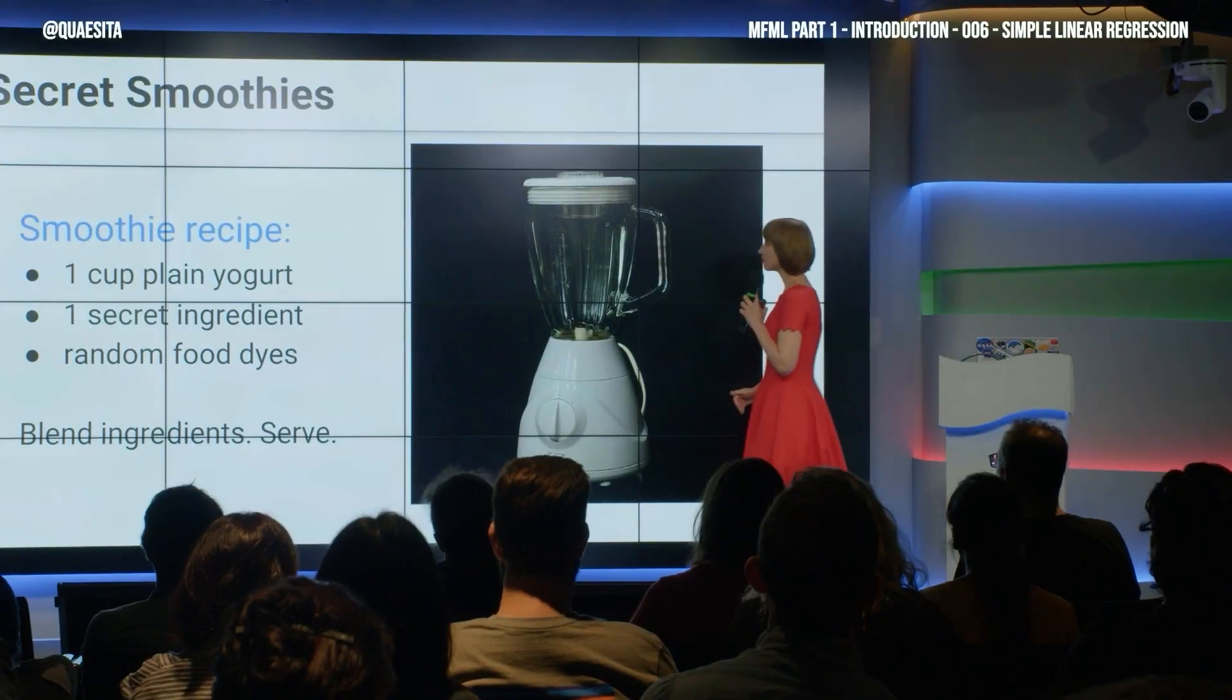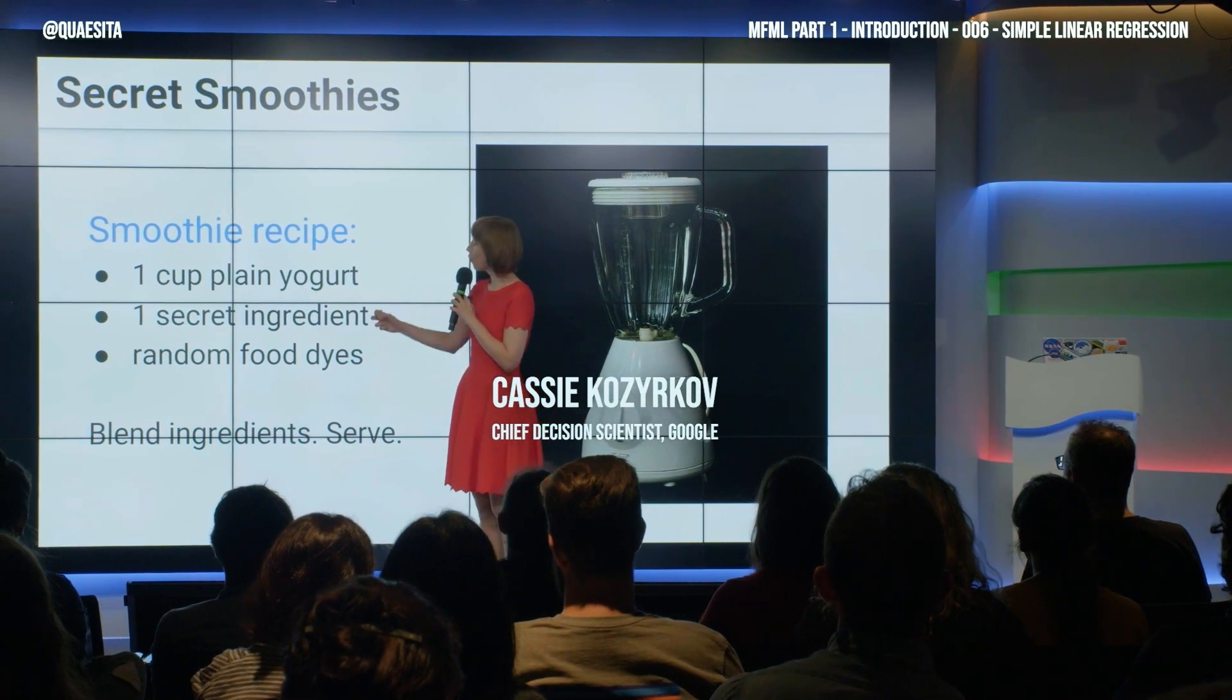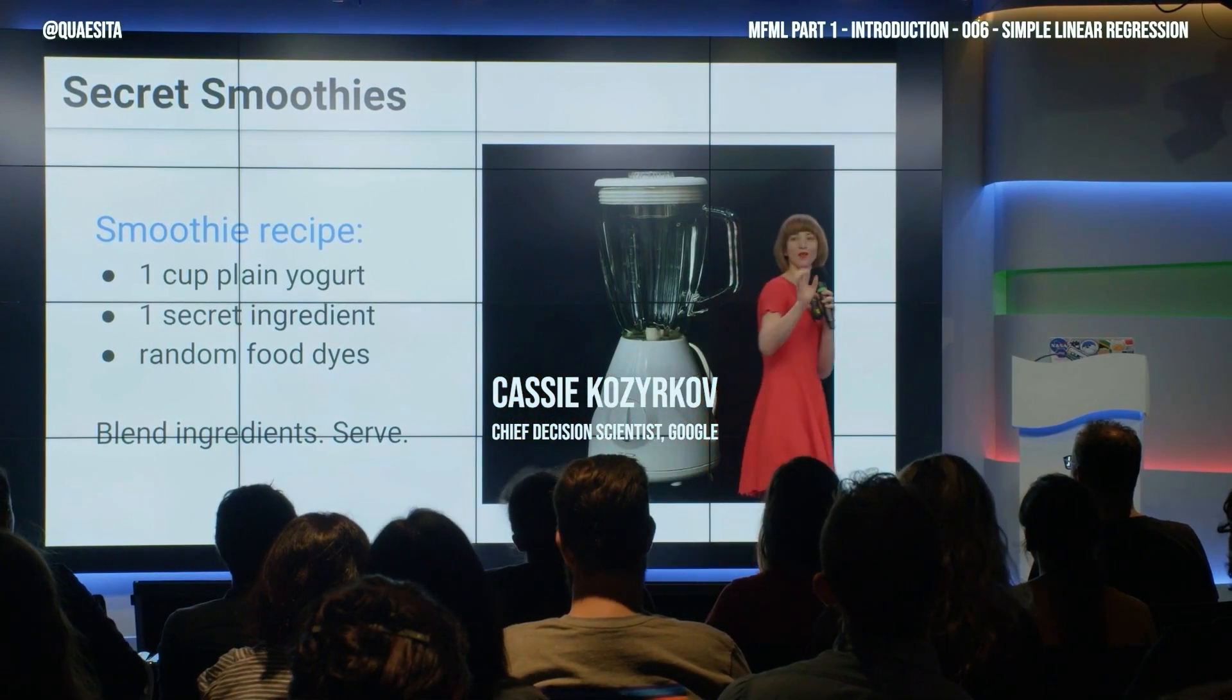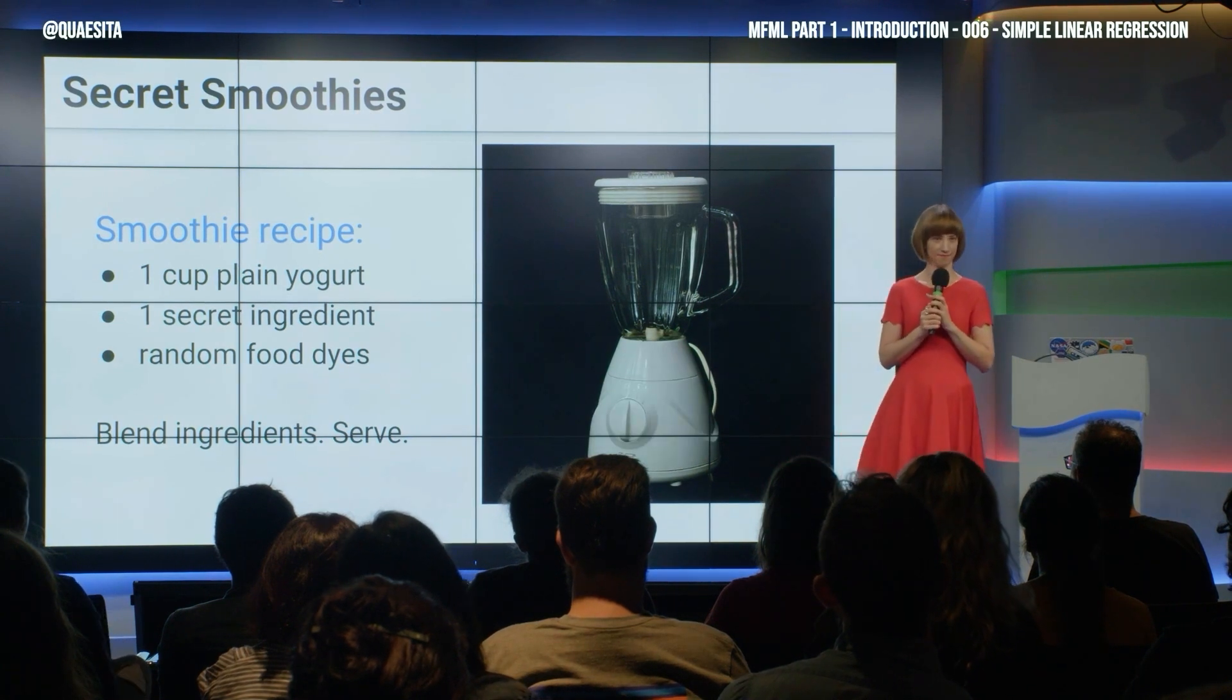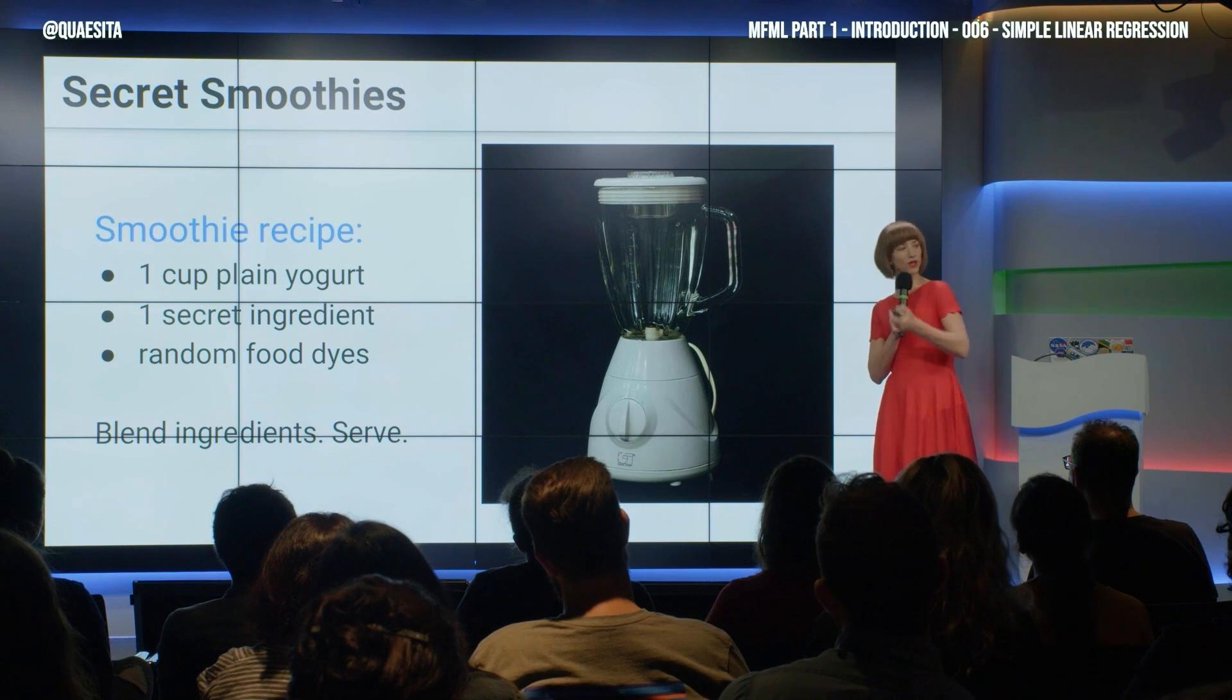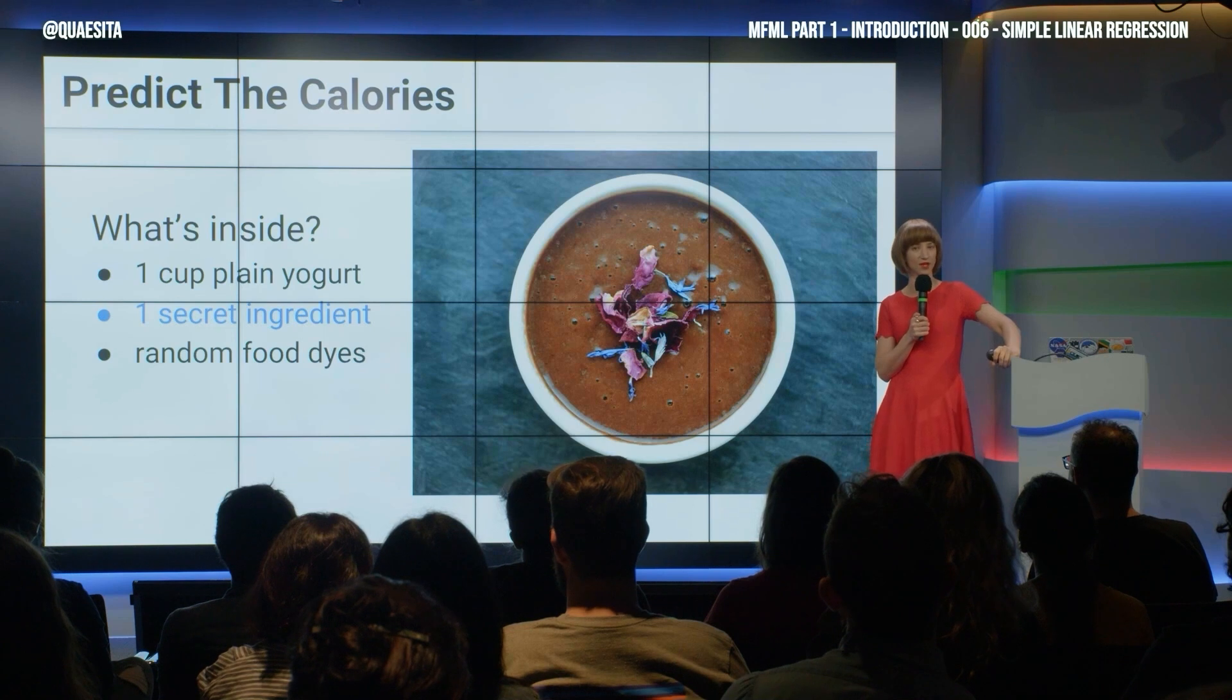For our example, we will be making smoothies. Every smoothie will have one cup of plain yogurt, one secret ingredient, and a bunch of random food dye so that you cannot tell what is in there. I blend it up, I serve it to you, and your goal now is to shout at me, what are the calories in this smoothie? Go.